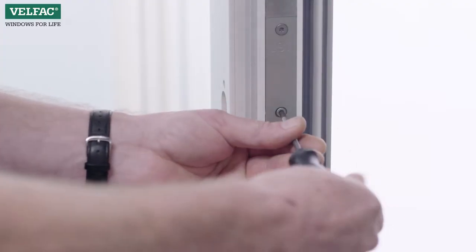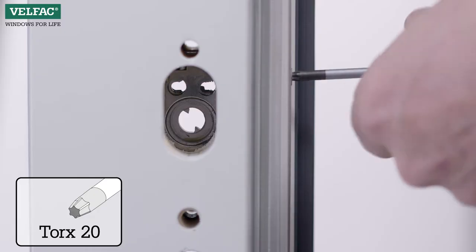Loosen the screw in the front of the lock case and place the latch plate in the lock case in the open position.